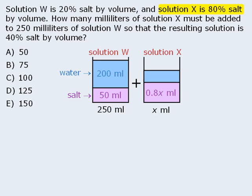Conversely, if the solution is 80% salt, then the remaining 20% must be water. So if there is x milliliters of solution and 20% of this volume is water, then we know that there is 0.2x milliliters of water in the solution.